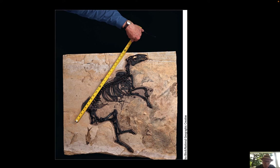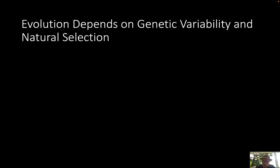Evolution as a theory came out in about the middle of the 1800s, from Charles Darwin and a scientist named Wallace who were working on it at the same time. They came up with the theory of natural selection, which is now widely accepted scientifically. There is debate on this, and people are welcome to believe what they want — it's not up to me to tell you what to believe. But this is the leading scientific theory at this point.